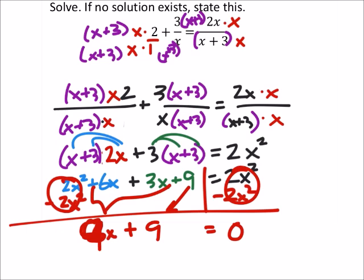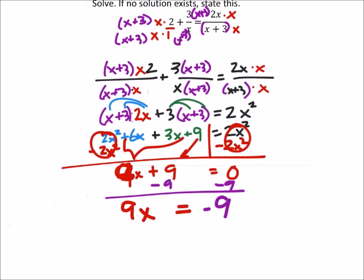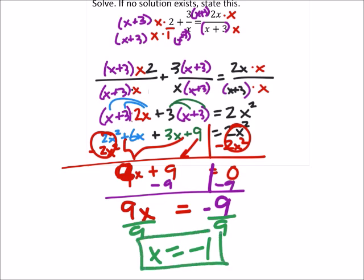Well, now, if I wanted to solve this, I would subtract 9 from both sides. I can split that. Now we'll just divide both sides by 9. And we get x is negative 1, which we'll go ahead and go in and check.